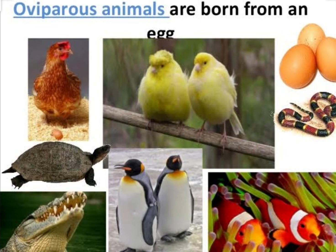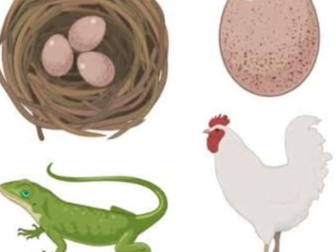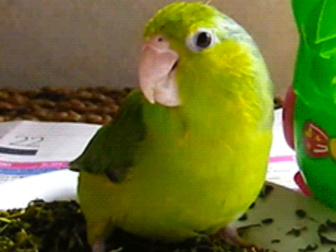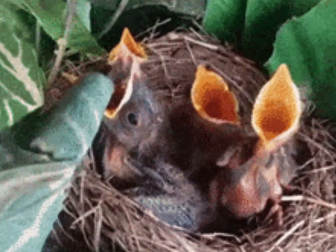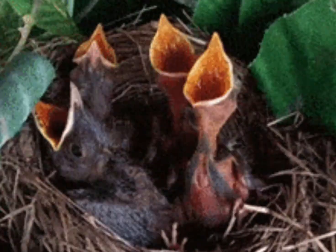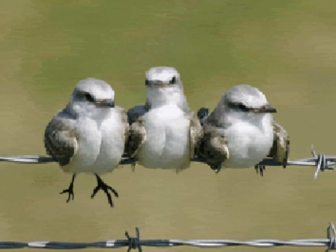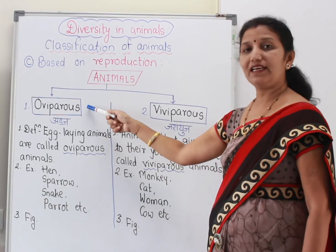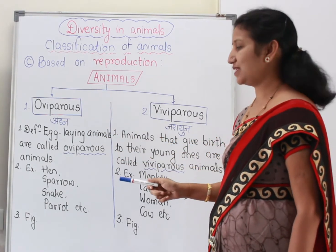Examples of oviparous animals are hen, sparrow, snake, parrot — nearly all birds are in this category of oviparous. Also butterflies lay eggs. That's why they are called oviparous animals.